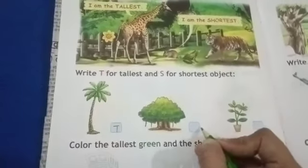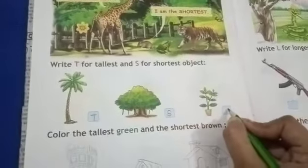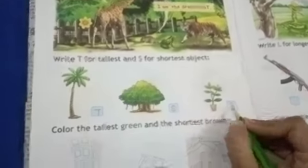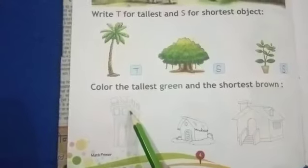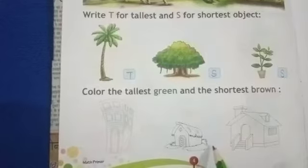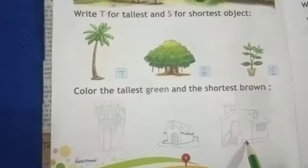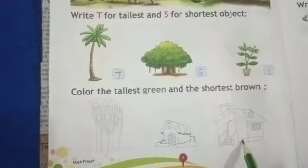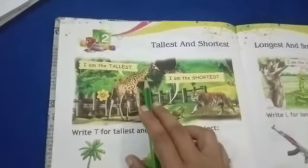The second exercise: color the tallest green and the shortest brown. Now you will see the tallest building — color it green. Color the hut with brown, and here you will also color the small house with the brown color.